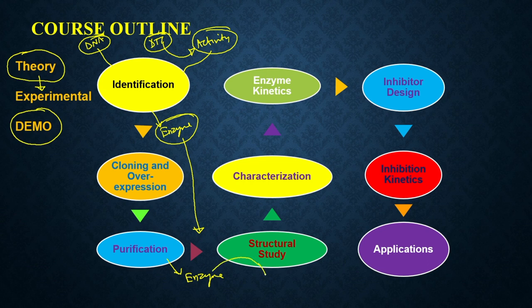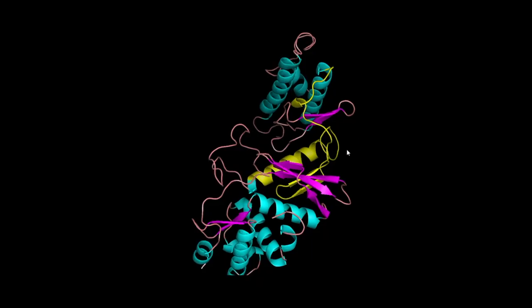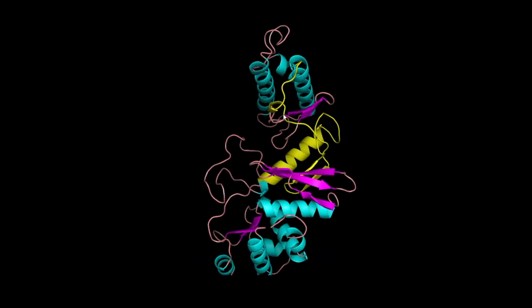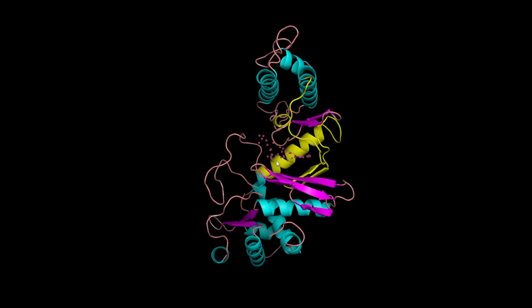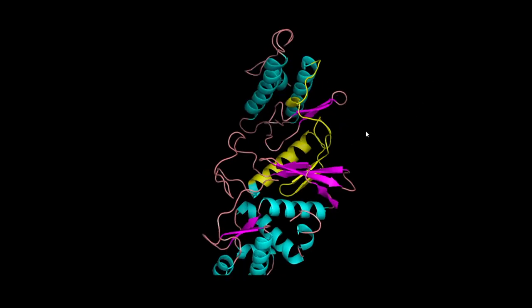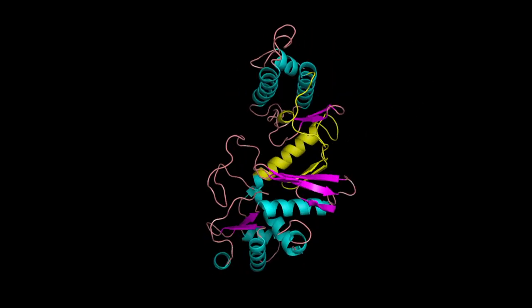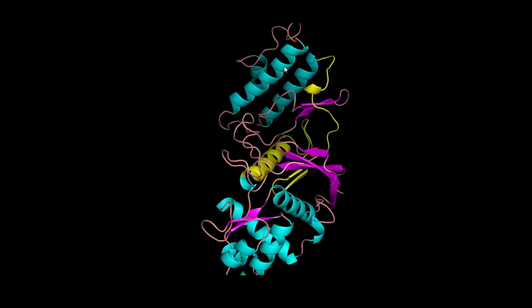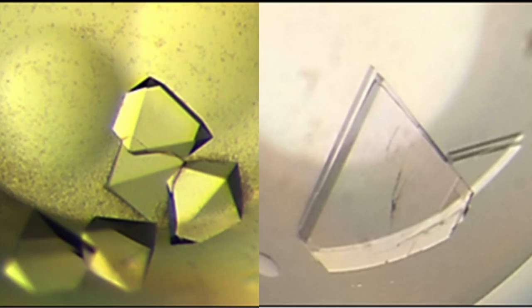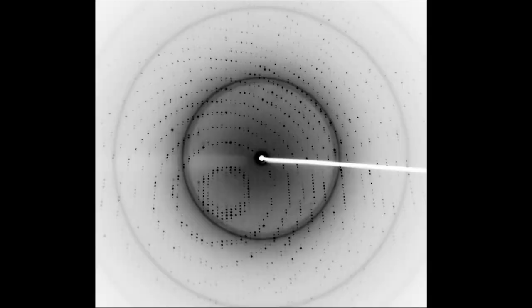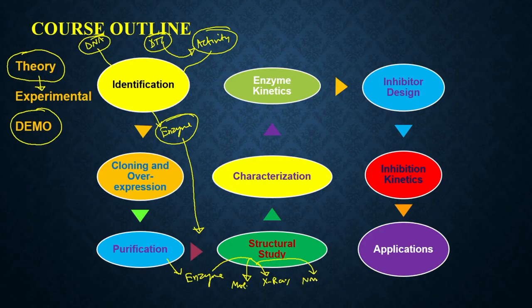One type of characterization is structural characterization. In structural characterization, we are going to discuss molecular modeling — in case the enzyme is utilized in other structural studies techniques like X-ray crystallography or NMR spectroscopy. So we are going to talk about molecular modeling, X-ray, and NMR spectroscopy. These are very large techniques, so we are not going to discuss them in complete detail.